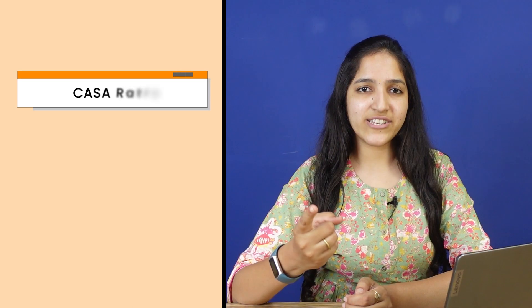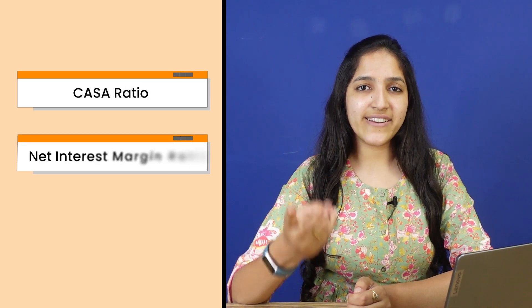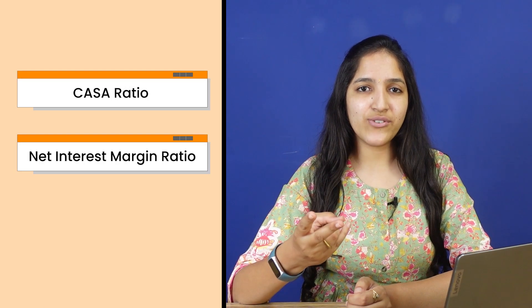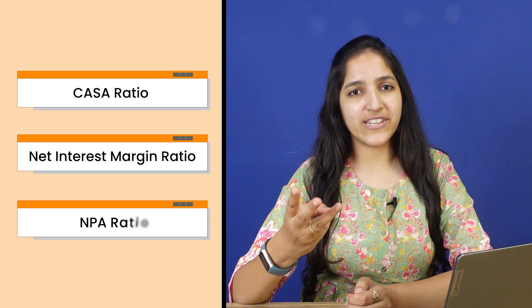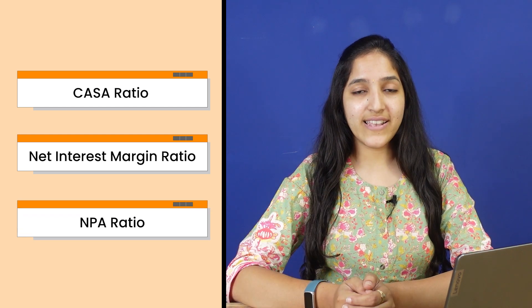But if you are analyzing a banking stock, you have to pay extra attention to a few ratios. Today we will discuss three specific banking ratios in detail, which are: CASA ratio, Net Interest Margin ratio, and NPA ratios. These ratios are like X-ray glasses, revealing a bank's true financial health and profitability.